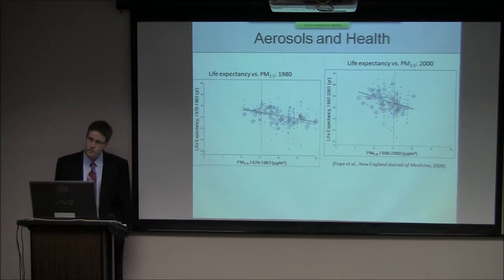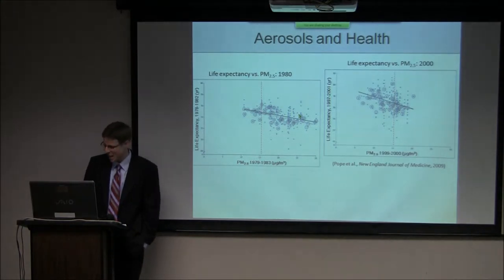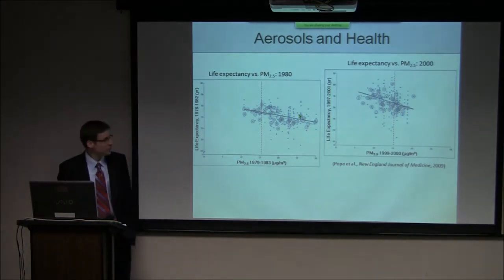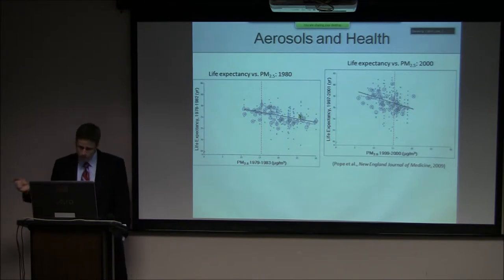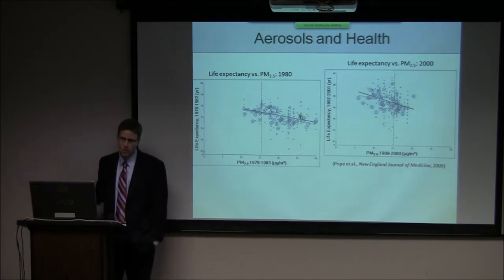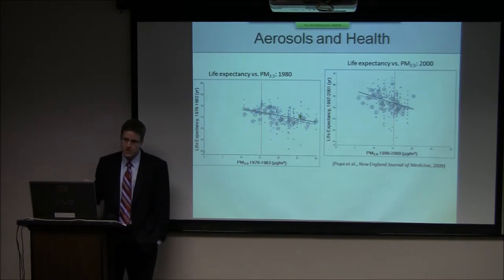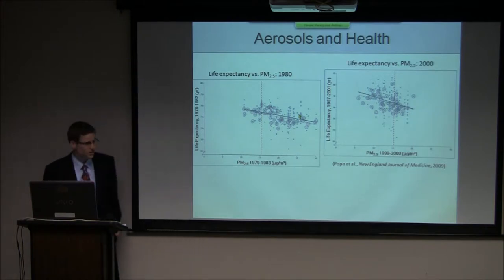Question: Can you point out the cities at the extreme ends of the distribution? From the previous figure, the worst city was Steubenville, Ohio — that was the 'S' — and the best was a small town in Wisconsin.